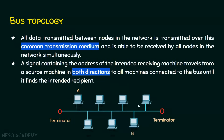In bus topology, there is a common transmission medium and all nodes are connected to this transmission medium. If node A wants to send data to node B, it sends the data over this transmission medium, and all nodes will receive this transmission. If A sends data to B, everyone receives a copy of the data signal including B, but all others will deny or reject this packet because the data signal is intended only for recipient B. All data transmitted between nodes is transmitted over this common transmission medium, and all nodes receive the signal simultaneously.